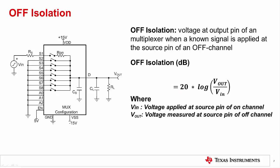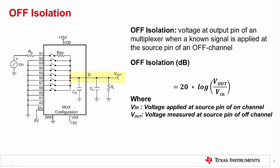Off-isolation is defined as the voltage introduced at the output pin of a multiplexer when a known signal is applied at the source pin of an off channel. A known signal is applied to the source pin of the off channel and the output voltage Vout is measured. Off-isolation is measured in dB and given by 20 times the log of the ratio of the output signal to the input signal applied to the off channel. Like crosstalk, off-isolation is a frequency-dependent phenomenon resulting from off-state parasitic capacitance, which depends on device packaging and pinout, manufacturing and fabrication processes, and board layout techniques.